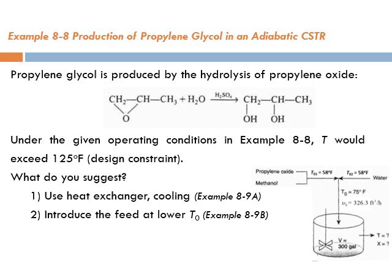To remind you, we had suggested three things to do: either use a heat exchanger with cooling coil - that's Example 8.9a - and the second option is to introduce the feed at a lower T0, which is Example 8.9b, the example we're going to do today.